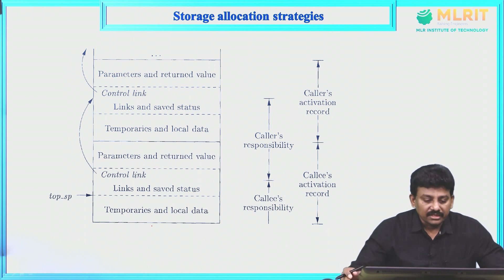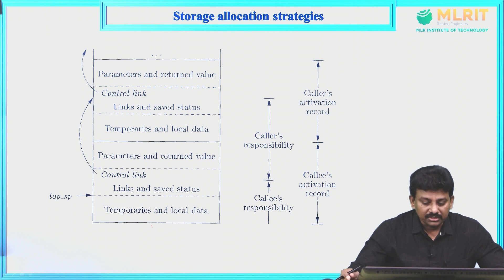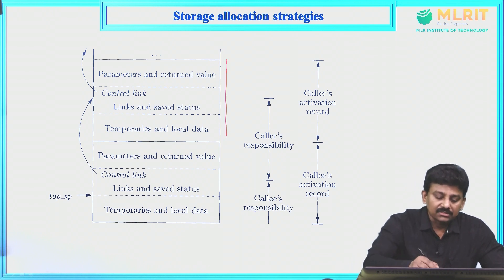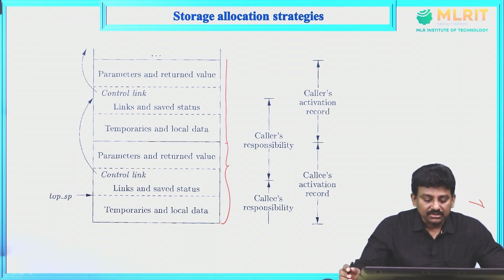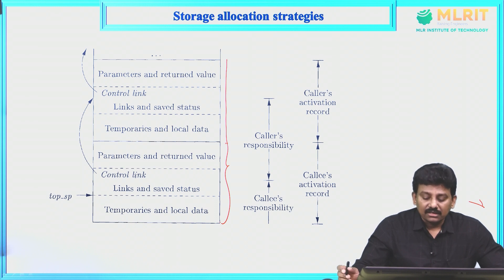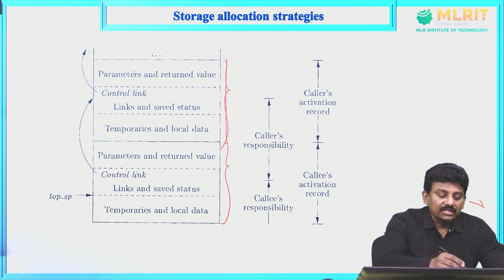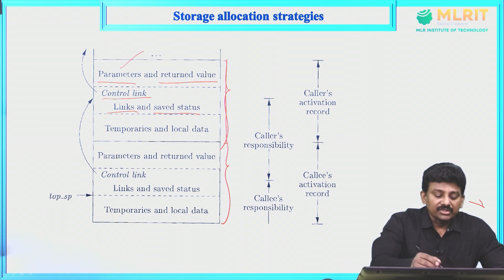This diagram shows the caller's and callee's responsibility. The caller's activation record and the callee's activation record are shown. The caller is the calling function and the callee is the called function. An activation record contains parameters, return values, control link, access link, saved machine status, temporaries, and local data.